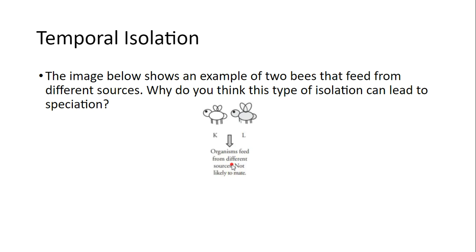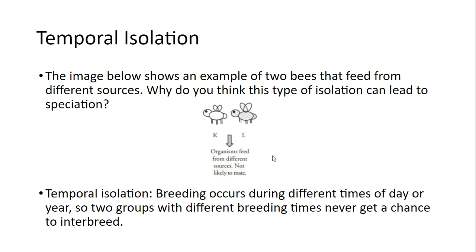The fourth and final type of speciation event is called temporal isolation. We have an image showing two bees that feed from different sources. Temporal, referring to the Latin word for time — breeding occurs during different times of the day or even different times of the year. The two groups, because they observe a different breeding time, never get the chance to interbreed. So the species are temporally isolated.